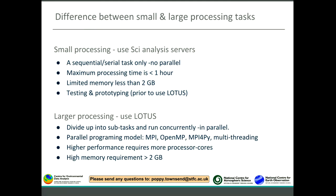What are the differences between small and large processing tasks? Starting with small processing: if your problem is considered a small processing task, we suggest you use the sci analysis server. This applies if your processing is a serial or sequential task that needs no more than one single processing unit or core, has no parallelism, runs for no more than one hour of wall time, and has a limited memory requirement of a maximum of two gigabytes. If you are about to migrate to LOTUS, we would still advise using the sci analysis server as a staging area for tests and prototyping to estimate the resources needed for your job.